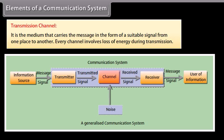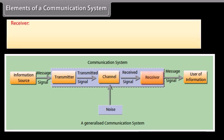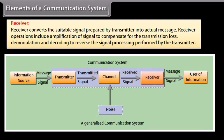Every channel involves loss of energy during transmission. The receiver converts the suitable signal prepared by the transmitter into the actual message. Receiver operations include amplification of the signal to compensate for transmission loss, and demodulation and decoding to reverse the signal processing performed by the transmitter.